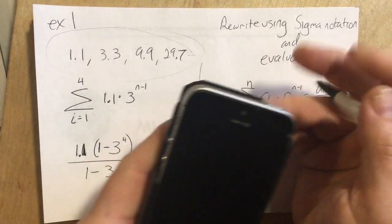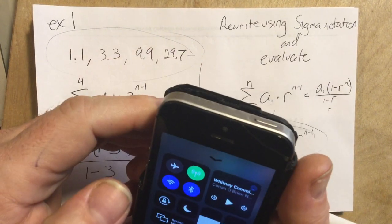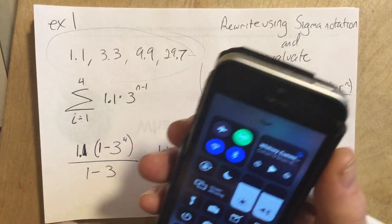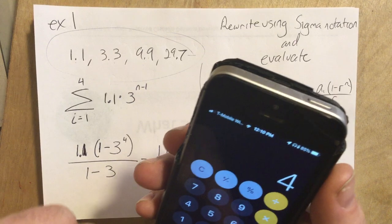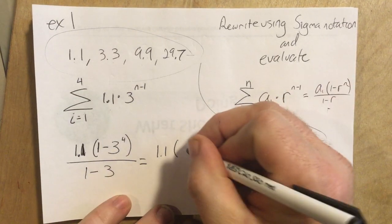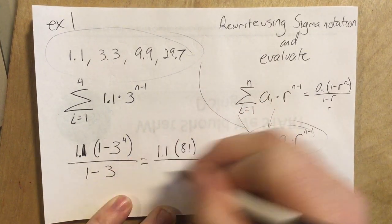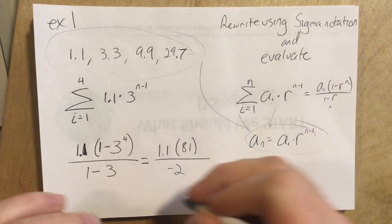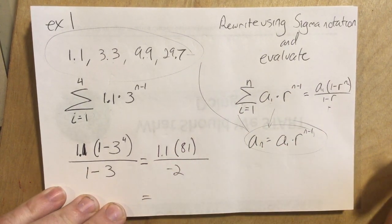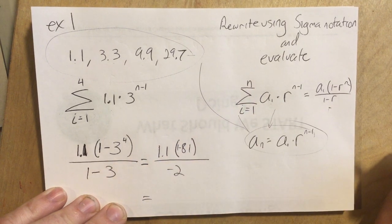Well, we can grab a calculator, find out exactly what it is. 3 to the 4th power, 81. 81 over 1 minus 3, that's negative 2. Okay. Oh, so that's 1 minus 81. My mistake there.